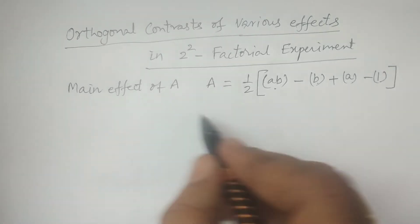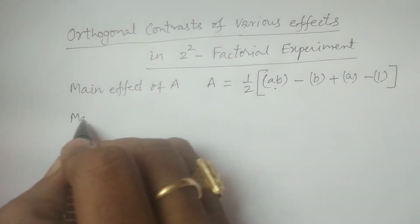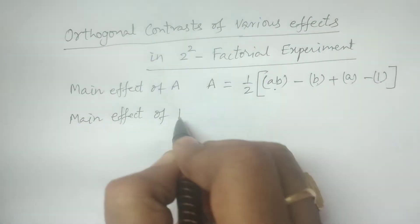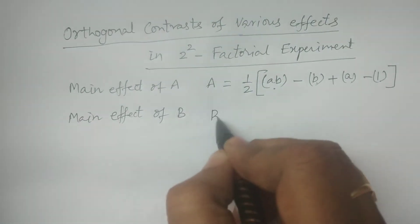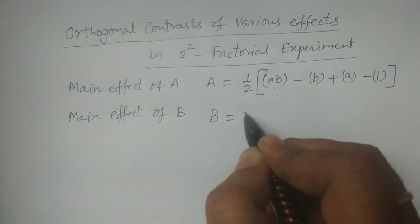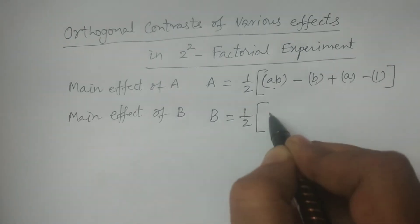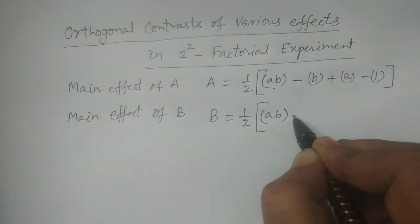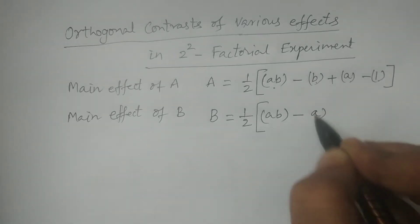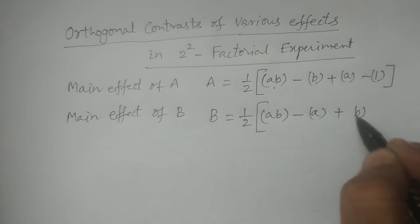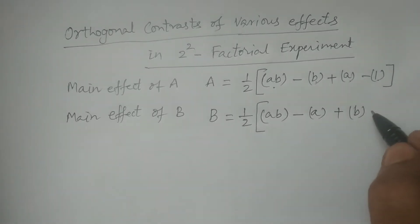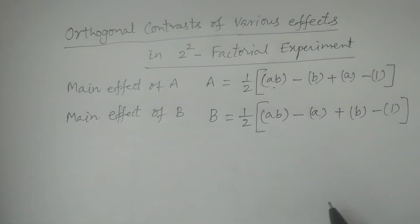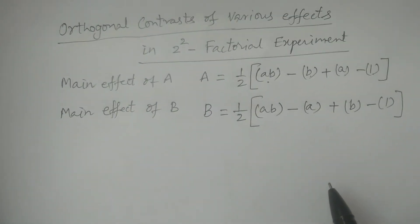Similarly, the main effect of B is written as: B = (1/2)[AB - A + B - 1]. This is the main effect of B.